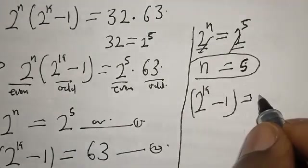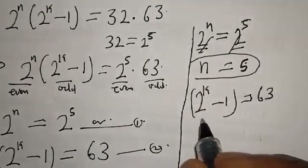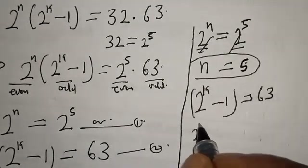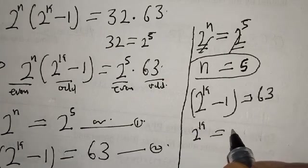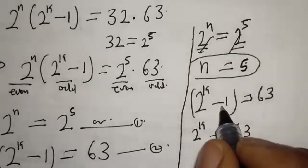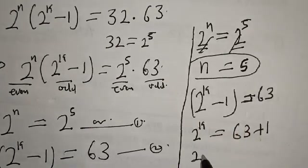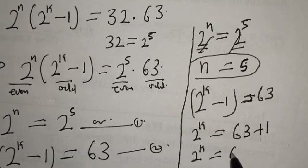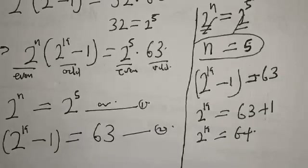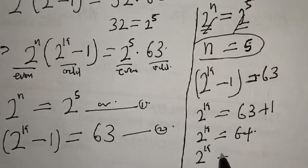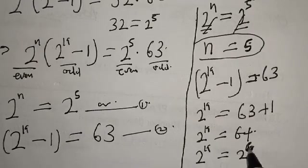From the second case, 2 raised to power k minus 1 is equal to 63. This implies that 2 raised to power k is equal to 63 plus 1, which is 64. And 64 can be expressed as 2 raised to power 6, so 2 raised to power k equals 2 raised to power 6.